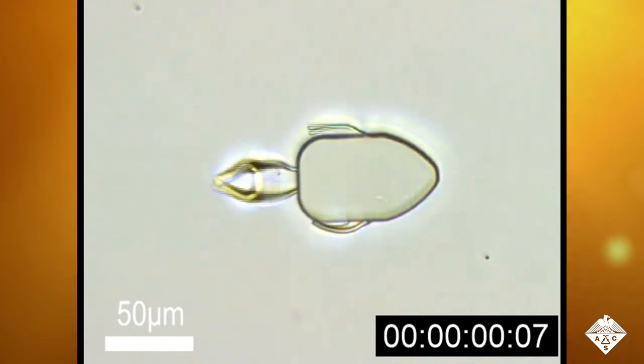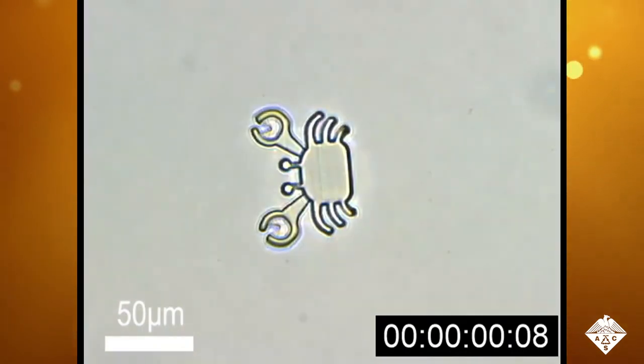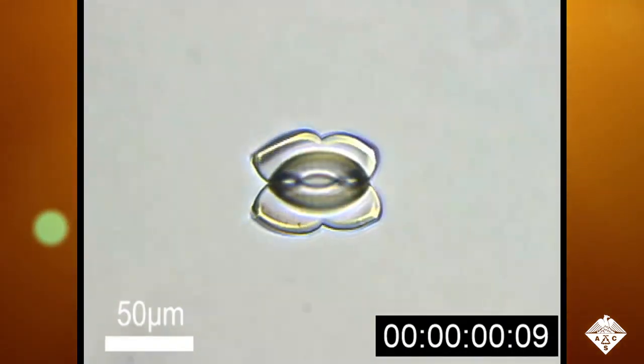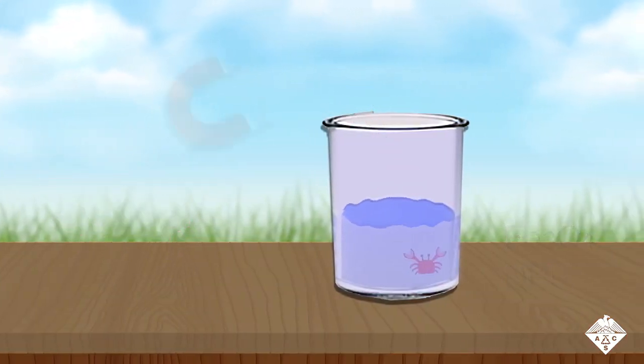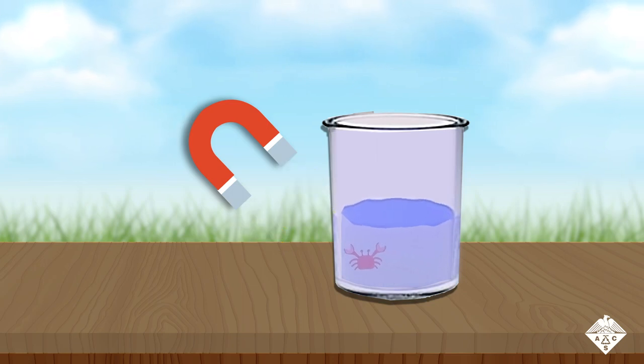They made shape-morphing micro robots that look like a fish, crab, or butterfly. Then they placed the micro robots in a suspension of iron oxide nanoparticles to make them magnetic.